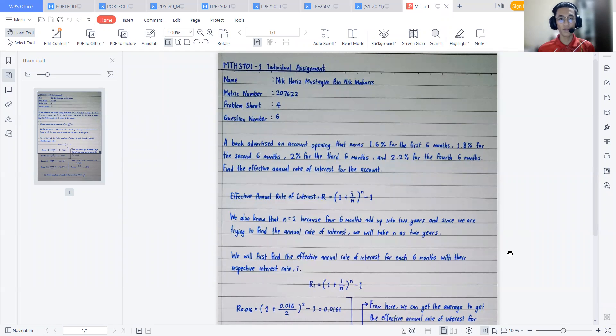Hi, assalamualaikum warahmatullahi wabarakatuh. My name is Nick Harris Mustaakim bin Maharis, my matric number is 207622, and this is my individual assignment video for MTH 3701 Group 1 Financial and the problem that I'm going to present today is problem sheet 4 question number 6.